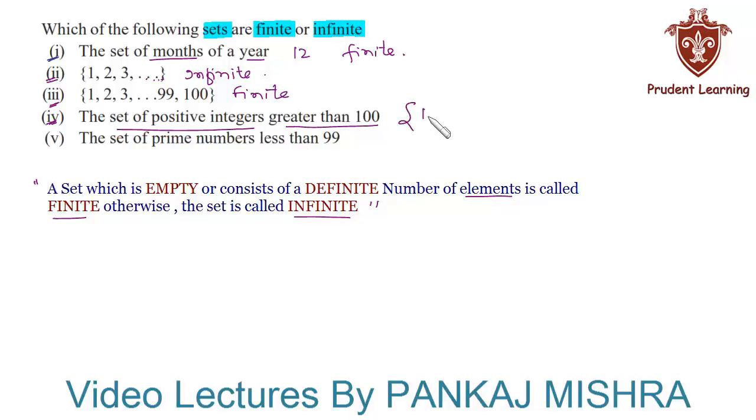We know that there are infinite number of integers that are greater than 100, so the given set has infinite number of elements. Hence the given set is an infinite set.